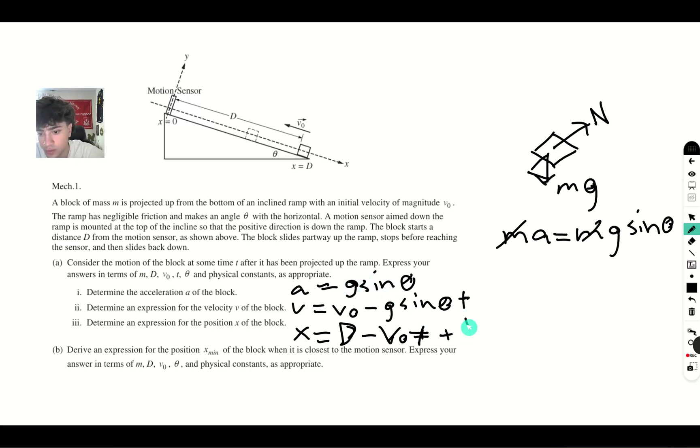Now let's find the time at which the block reaches equilibrium, where it's neither moving up or down. And that's how we will find x min, as part b is asking for us.